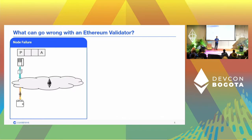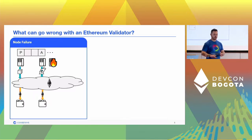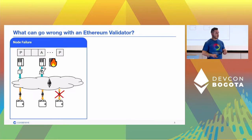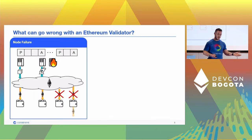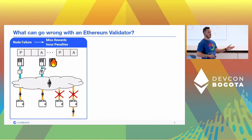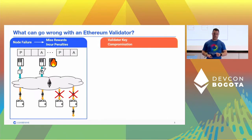In some slots you have to propose a block, in others you are an attester, and your Ethereum validator is working — it produces blocks, you get rewards, produces attestations, you get rewards. But suppose your node fails. If you start missing your duties — if you miss a block you don't receive rewards, if you miss an attestation you don't receive rewards and you also get penalized. So a node failure means you miss rewards and can incur penalties.